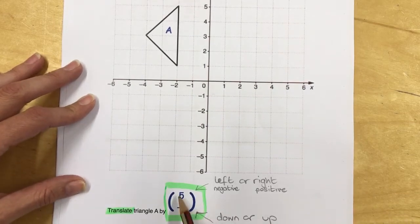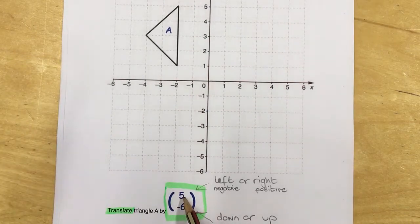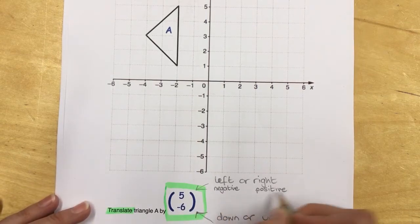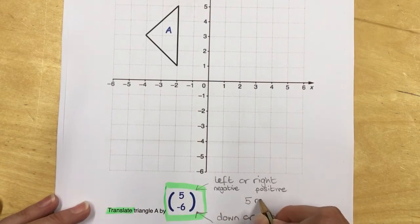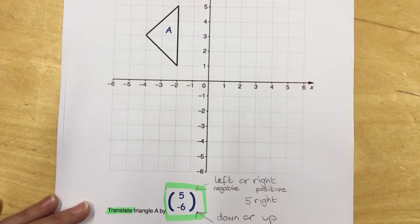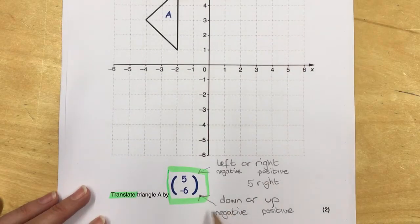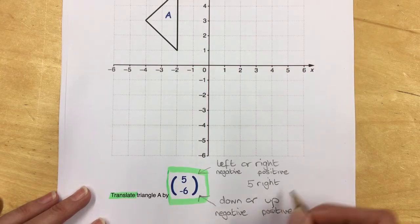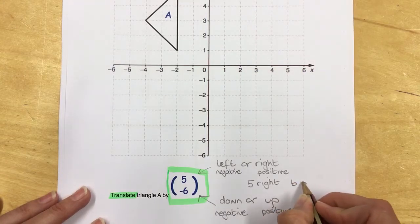This number on top is positive, so it's going to move five to the right. The number on the bottom is negative, so it's going to move six down.